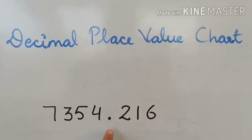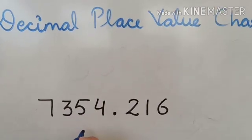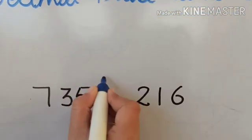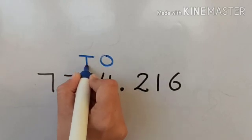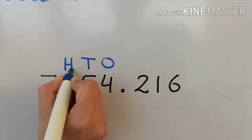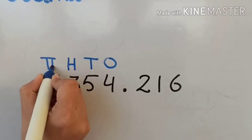Now first check the decimal and then start writing the places of integral part. So ones, tens, hundreds, and thousands.